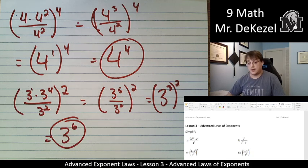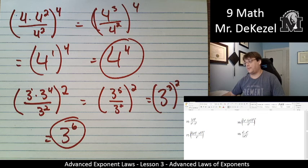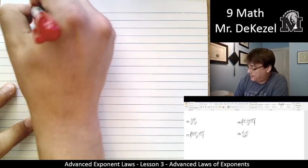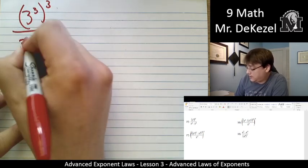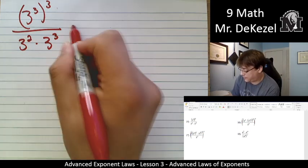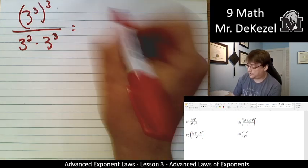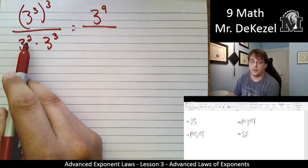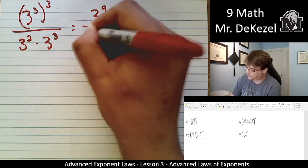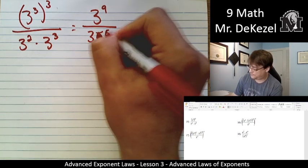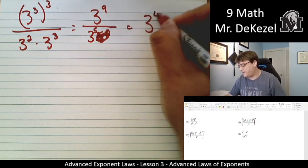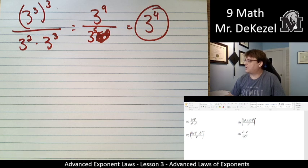Do you have any questions while you're doing these? Go ahead and pause and ask somebody. Let's move on to the next ones, which are even more complicated. We have three to the power of three, to the power of three, all over three to the power of two times three to the power of three. We're going to do the top and bottom separately. Exponent of exponent: three times three is nine. Then two plus three is five because they're multiplied with the same base, so we add them — three to the power of five. Because we have a quotient, we subtract: nine minus five is four. So three to the power of four.